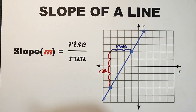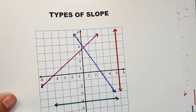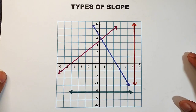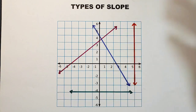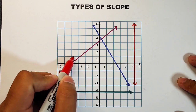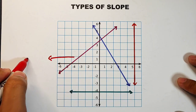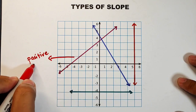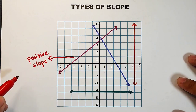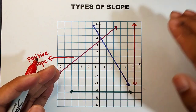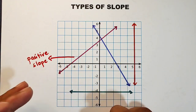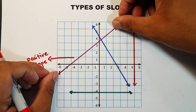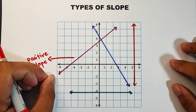Let's continue with the different types of slope — there are four types. The first one is called positive slope. Simple description: a positive slope is a straight line that rises from left to right. So remember, it rises or goes up from left to right. When you see this kind of line, the slope you calculate will automatically be a positive slope.